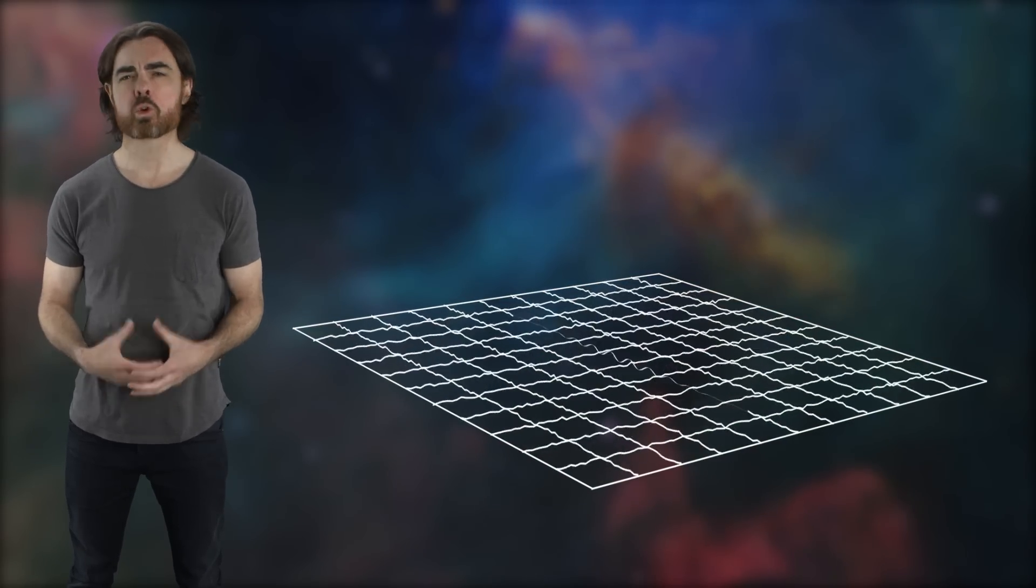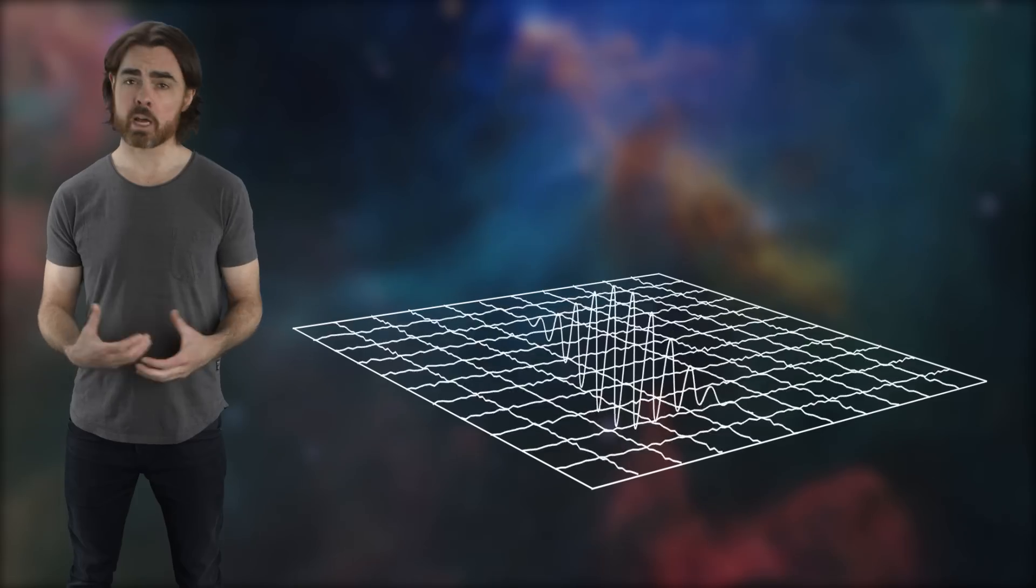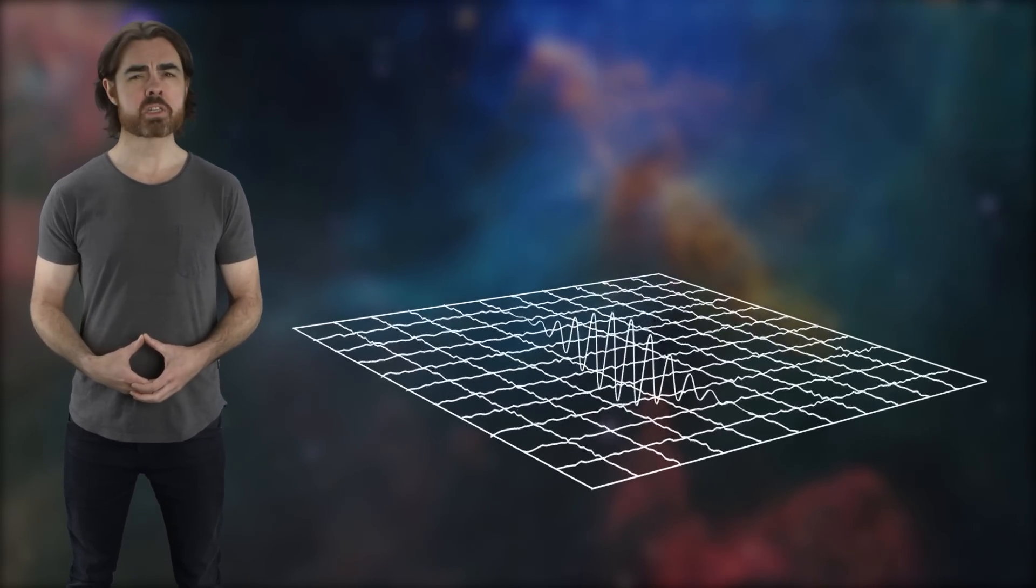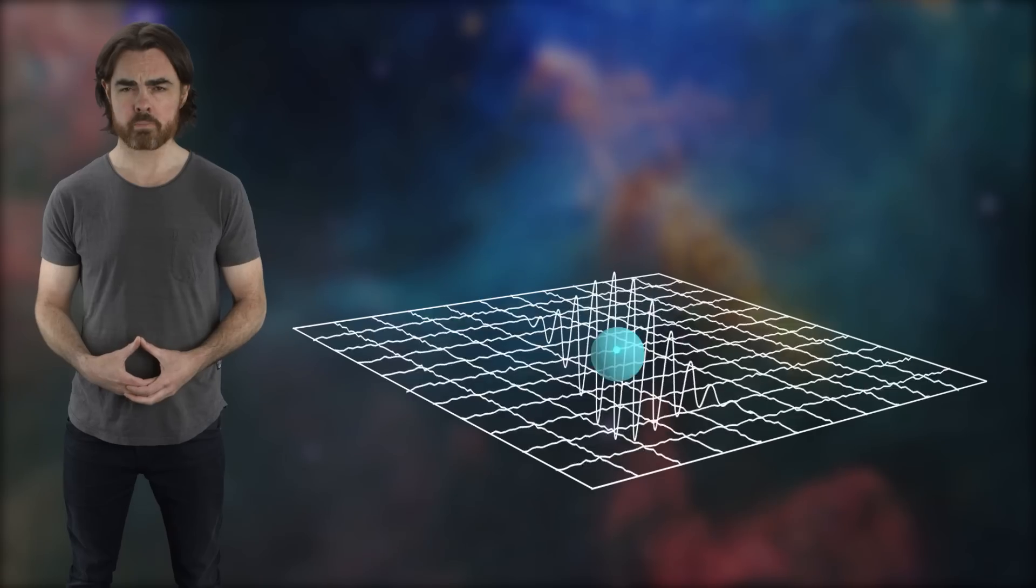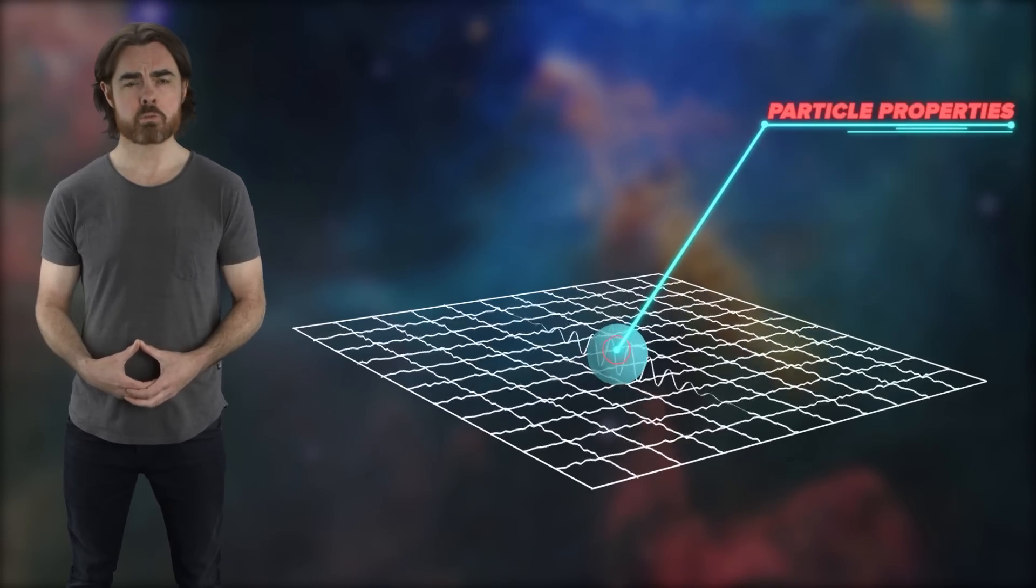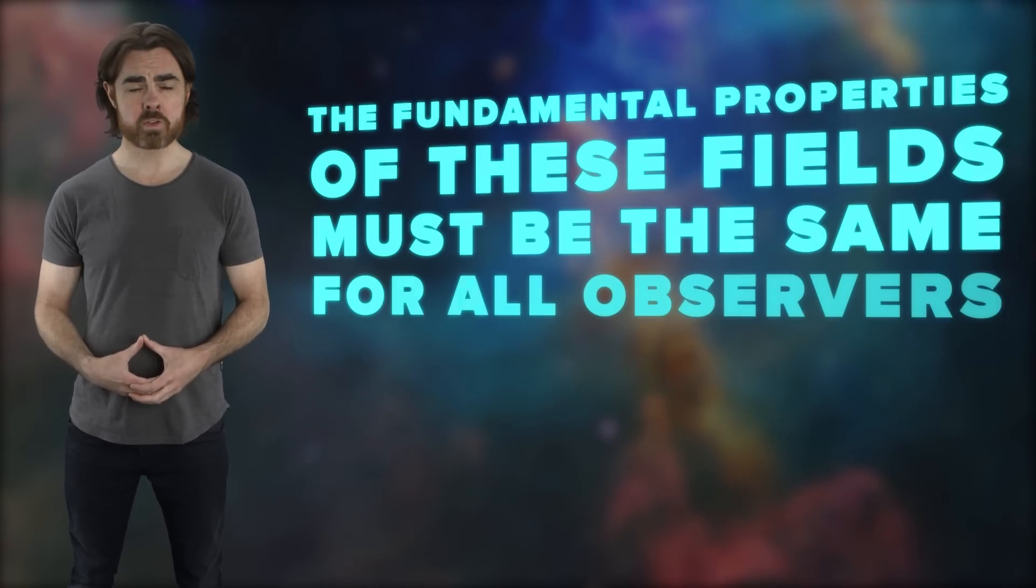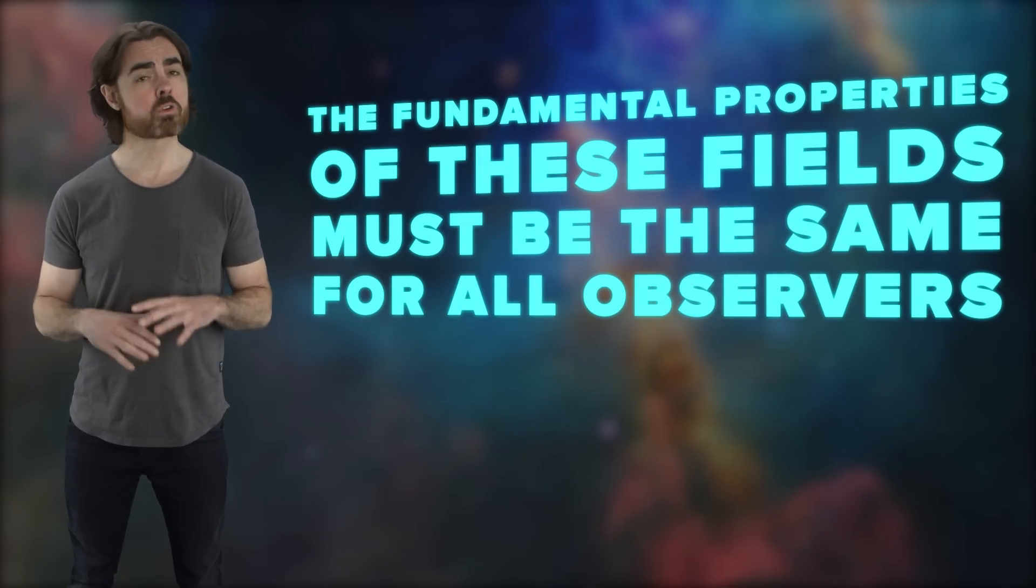To get at this idea of observer-dependent particles and vacua, we're going to need some quantum field theory. And we're going to need to draw heavily on this recent episode. In QFT, we think about each particle type as having its own quantum field that exists at all locations in space. If the field vibrates with a single quantum of energy, we see a particle. That oscillation can be distributed over some region of space, representing the possible positions of the particle. The properties of the particles are encoded in the properties of the fields. The laws of physics as we know them are the rules defining how particles interact. For the laws of physics to be consistent, the fundamental properties of these fields must be the same for all observers.